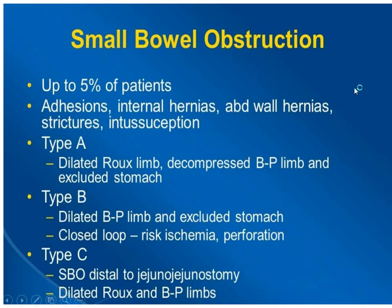Small bowel obstruction is another complication occurring post-operatively in up to 5% of patients, due to adhesion, internal hernia, abdominal hernia, stricture, or intussusception. There are three types. Type A involves a dilated Roux limb with a decompressed biliopancreatic limb and excluded stomach. Type B involves a dilated biliopancreatic limb and excluded stomach — the key difference is that in type B the excluded stomach is dilated, while in type A it remains decompressed.